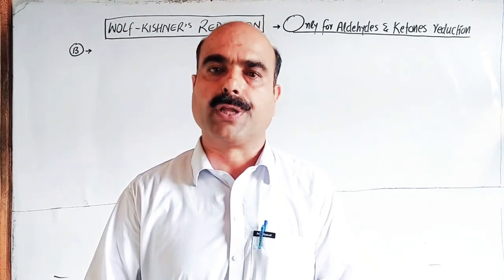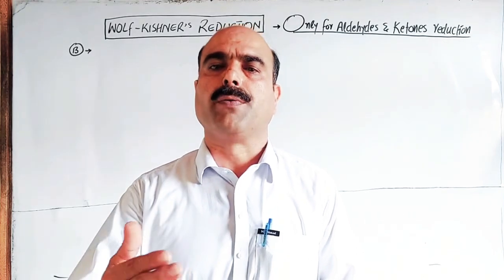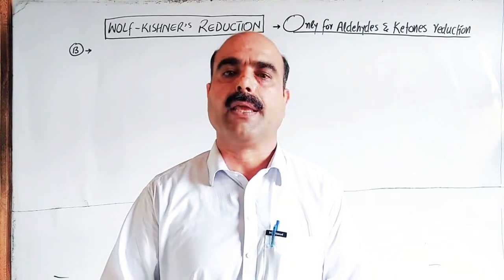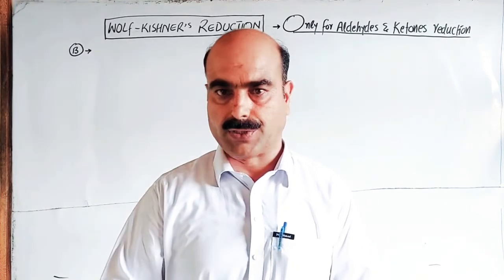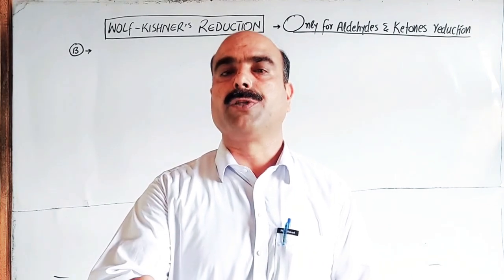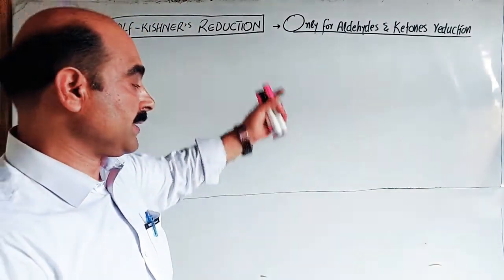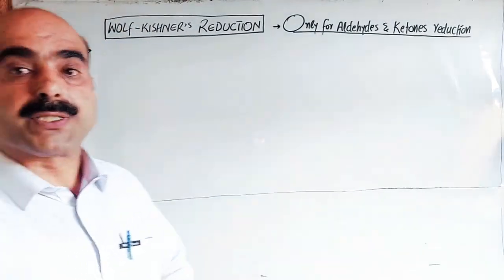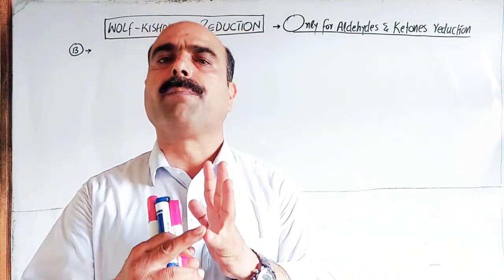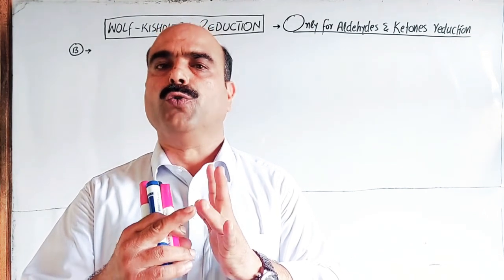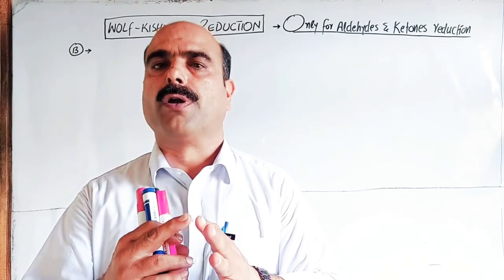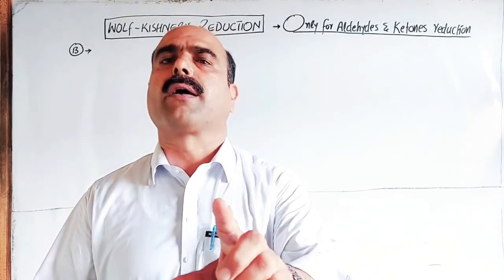Students, you should watch the previous video where Clemmensen reduction was covered — how the aldehyde or ketone undergoes reduction using a different reducing agent. For reduction, there are four methods: one — loss of oxygen; two — addition of hydrogen; three — addition of electrons; four — decrease in oxidation state.